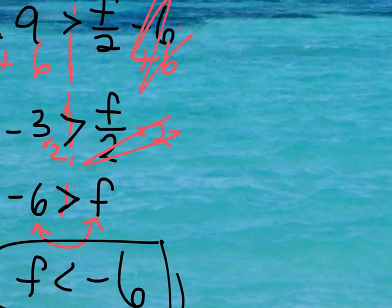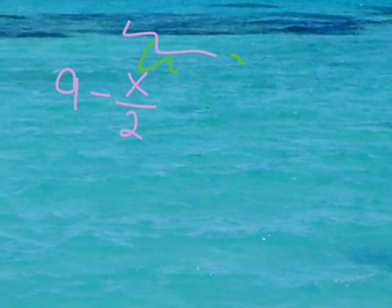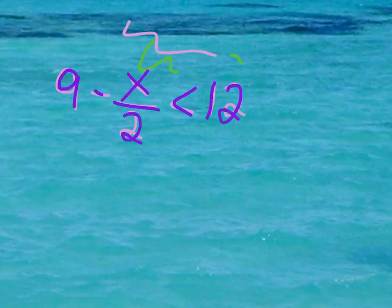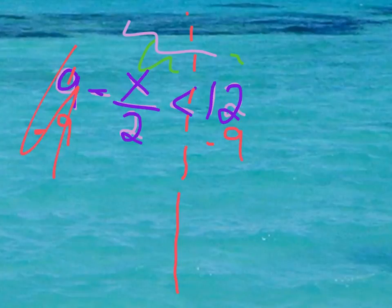Now let's take a look at one that involves multiplying or dividing with a negative number. Let's say we're doing 9 minus x over 2 is less than 12. So first thing we're going to do is get rid of this 9. So I'm going to subtract 9 on both sides of the inequality here. This is our left side and right side. Those will be cancelled out. And we're going to be left with negative x over 2 is less than 12 minus 9. That is 3.